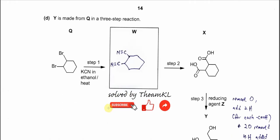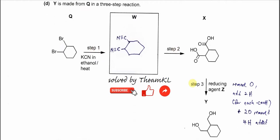For the part D. Y is made from Q in three steps reaction. So this step one, step two, step three. Okay. So it's produced this, this diol. And the step one is the involve the KCN in ethanol with heat.